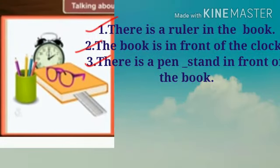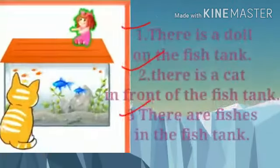And this last picture: there is a ruler in the book. The book is in front of the clock. There is a pen stand in front of the book. There is a clock behind the book. There is a spectacle on the book. Asha prakarchi vakya ban.